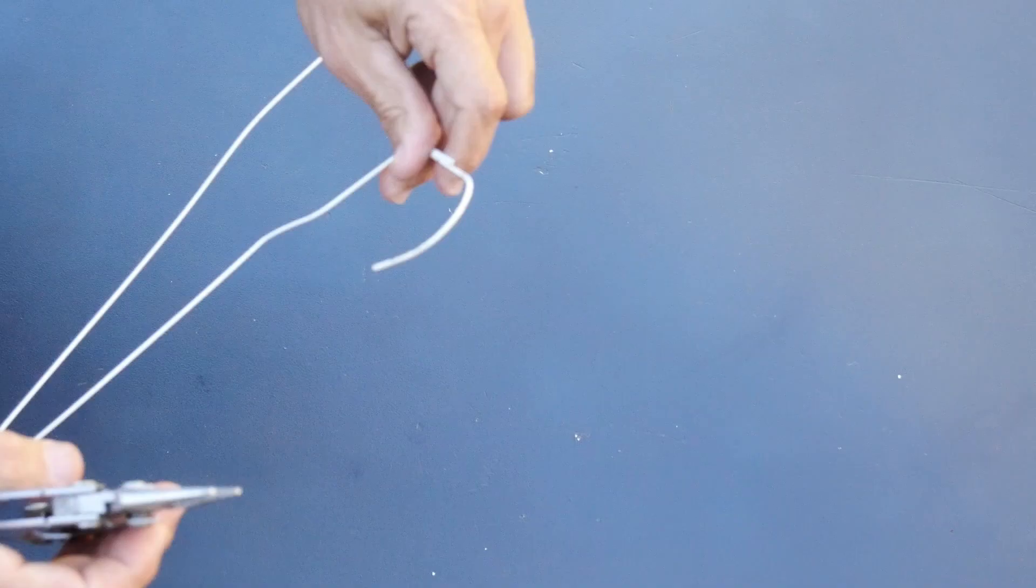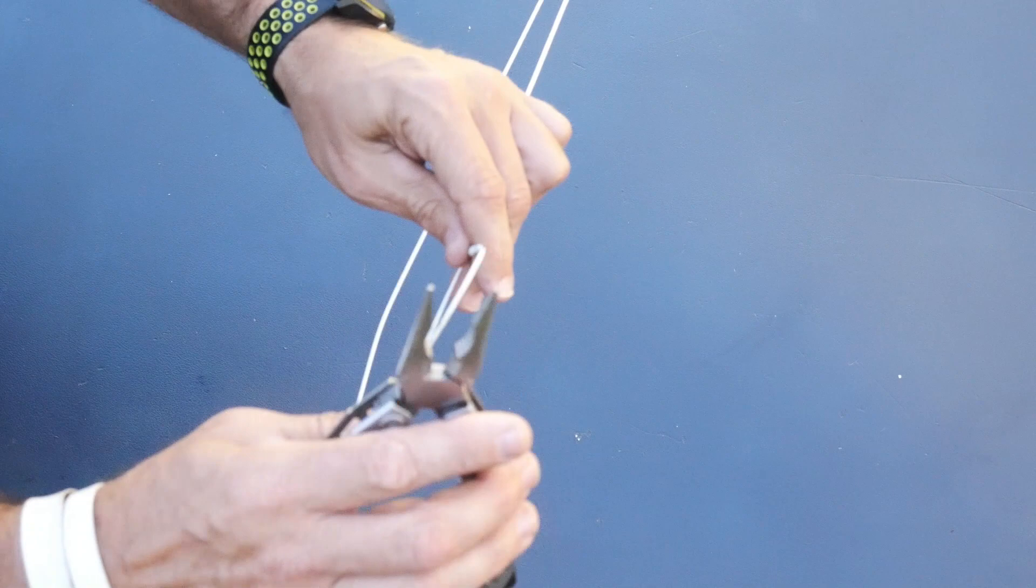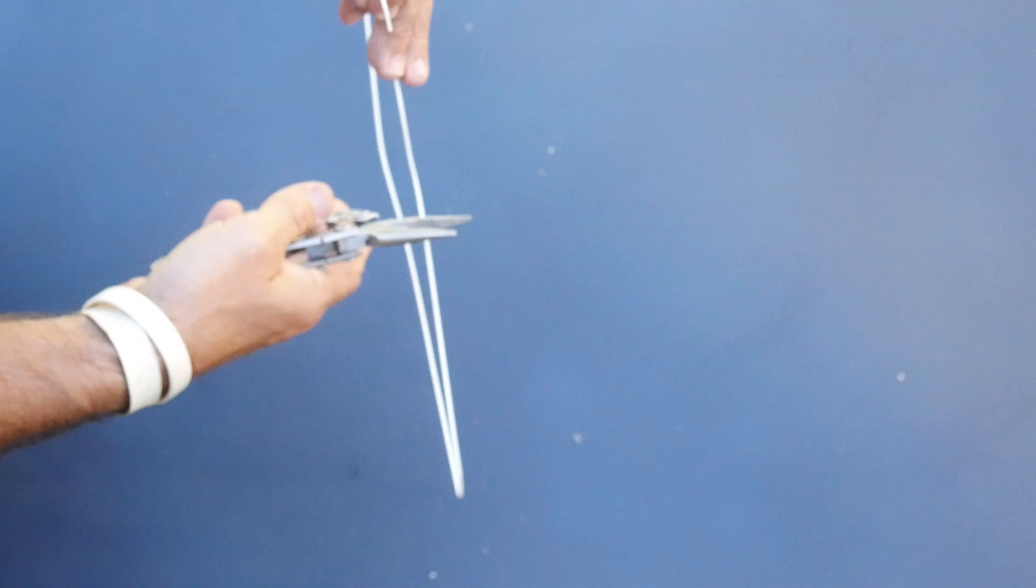First thing we're going to test is the wire cutters. Let's see how well. So I've got a coat hanger here. Not too bad. Look at that. Cuts through a coat hanger fairly well. Cutters I like. I've used these cutters a bunch.